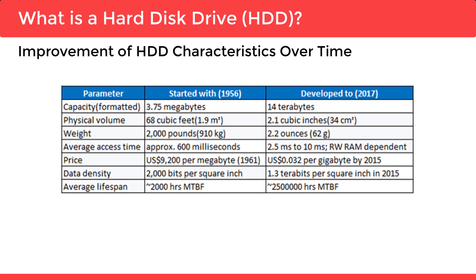Data density improved from 2,000 bits per square inch to 1.3 terabits per square inch in 2015. Average lifespan also improved dramatically, from 200 hours mean time between failures back in 1956, to 2.5 million hours mean time between failures in 2017.